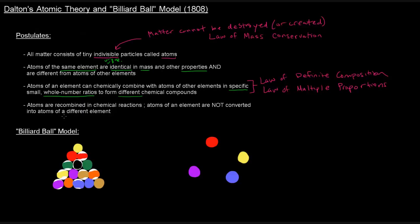The last thing that he said was that atoms are recombined in chemical reactions. Chemical reactions as opposed to nuclear reactions. That's a detail that we'll talk more about later. But atoms are recombined in chemical reactions. And he says that atoms of an element are not converted into atoms of a different element. So if you have atoms of an element, they cannot be converted into atoms of a different element.